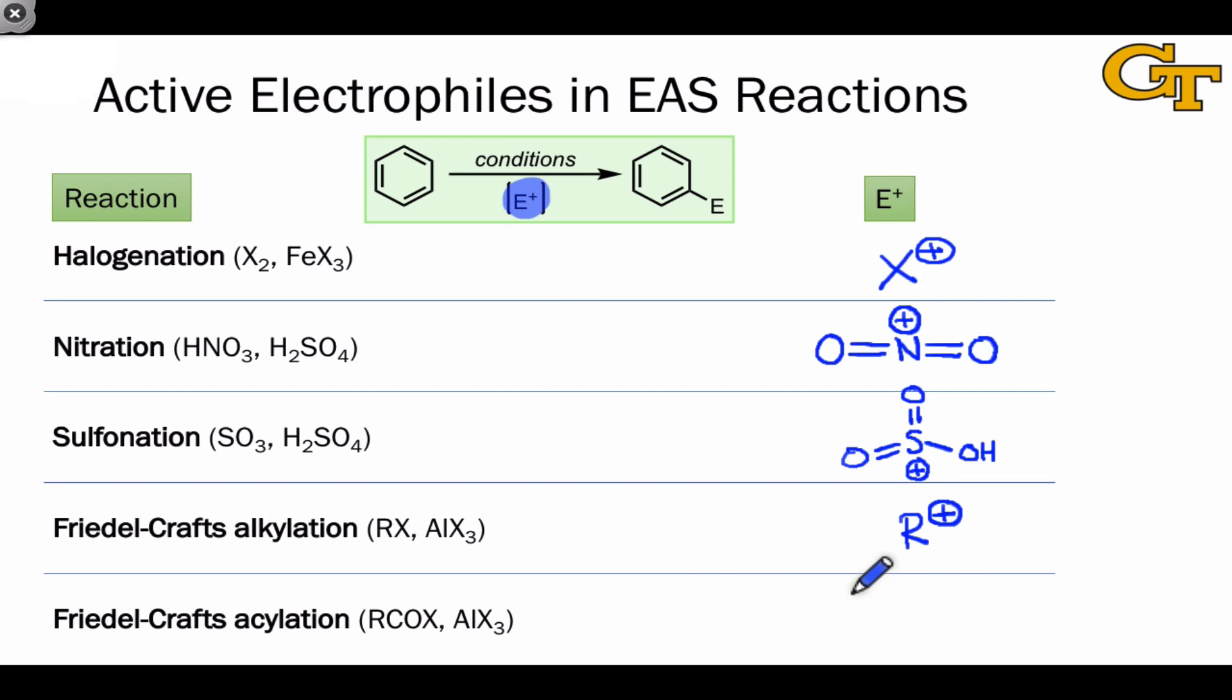Carbocations have some issues, not least among which is rearrangement, and one strategy to get around this involves the use of what are called acylium ions in Friedel-Crafts acylation reaction. These acyliums are the key electrophilic species in these reactions.